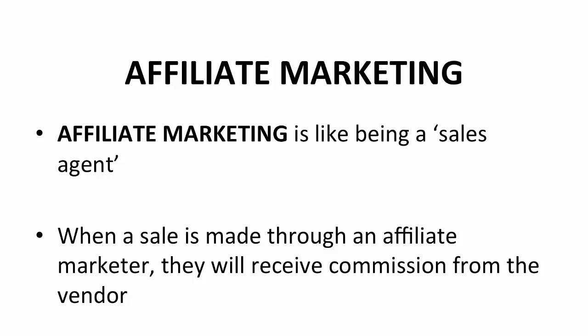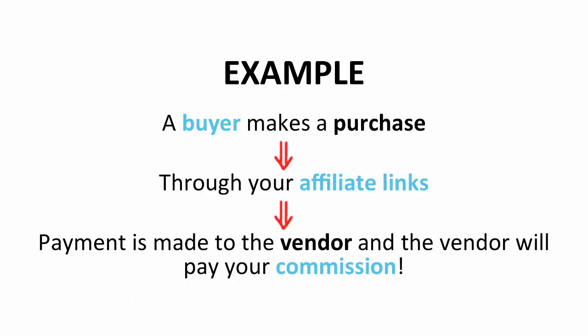An affiliate is essentially an online sales agent that conducts sales to earn commission. They sell products from a vendor. When a sale is made through an affiliate, the affiliate will receive commission from the vendor. For example, when a buyer makes a purchase from your affiliate links that you provide, the payment will be made to the vendor, and the vendor in turn will pay your commission. This is the basic of what you need to know.